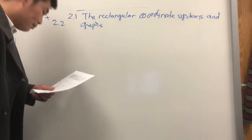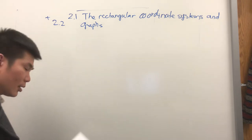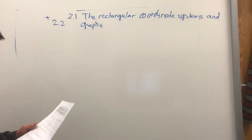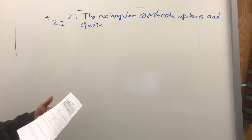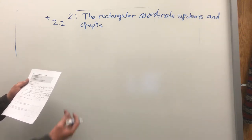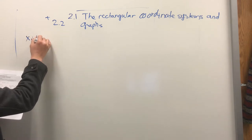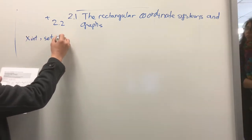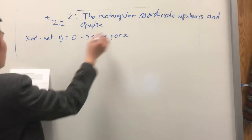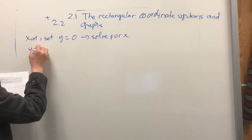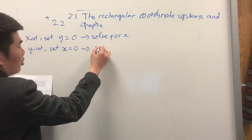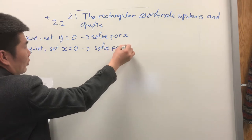First thing, we did learn about given equation and find the intercept in class today. You can just follow the form — for the x-intercept, you have to set y equals 0 and then solve for x. For the y-intercept, you're just going to set x equals 0 and then solve for y. Similarly.